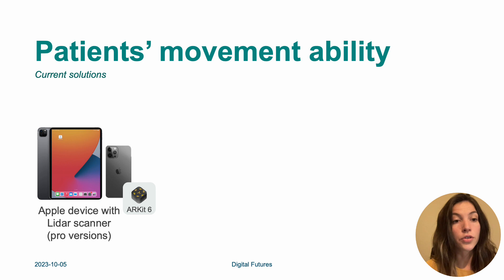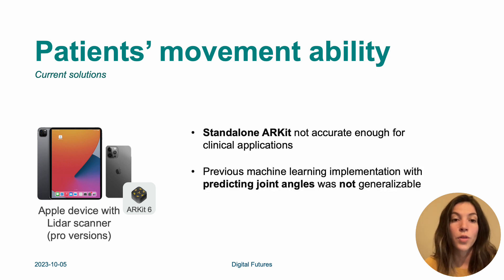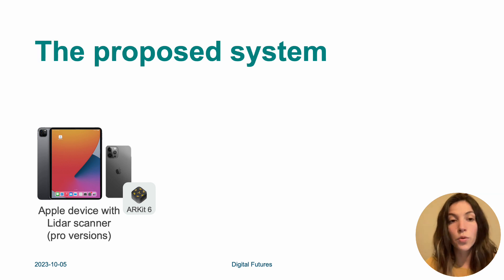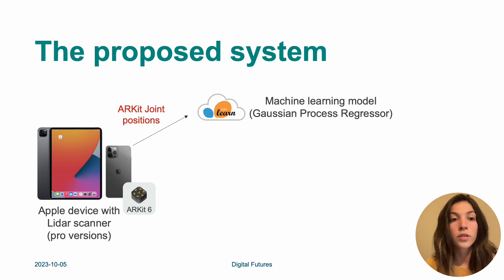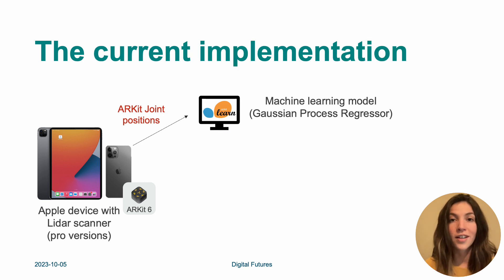For the current solutions using the Apple device with LiDAR scanner, the standalone ARKit is not accurate enough for clinical applications. As part of the project, we developed a machine learning algorithm that predicts joint angles, but we realized it is not generalizable to new subjects. So we tried a different approach: as a proposed system, we collect the ARKit joint positions from the phone, then send them to the cloud where a trained machine learning model — in our case a Gaussian process regressor — predicts the updated joint positions to improve the results.